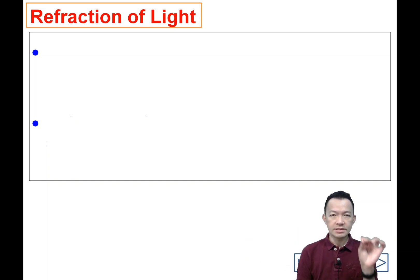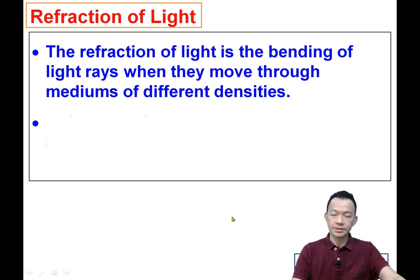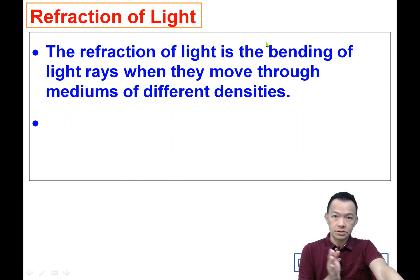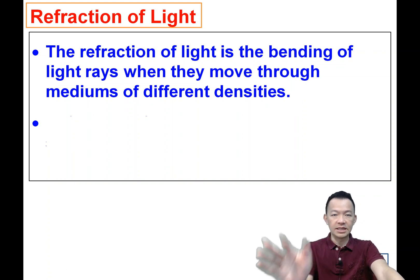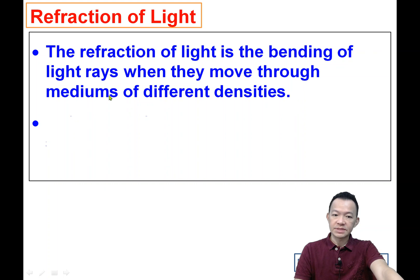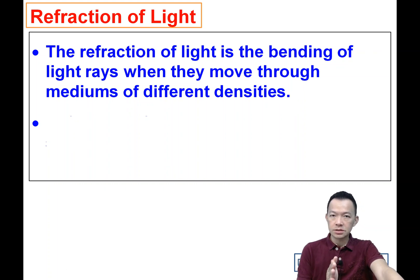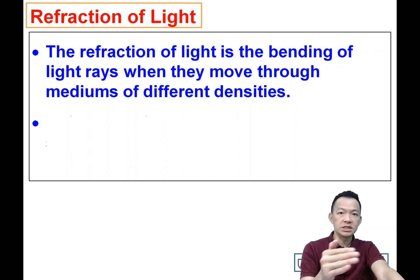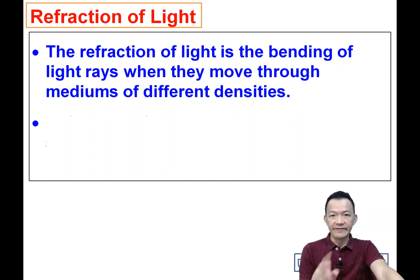So what is the deflection of light, or why can light be deflected? The deflection of light is a bending of the light when it moves through mediums of different density. If the two mediums have different density, the light will bend — that is the deflection of light.